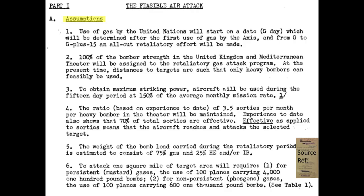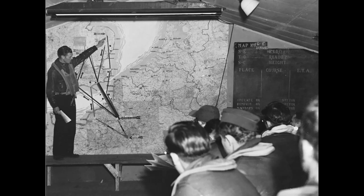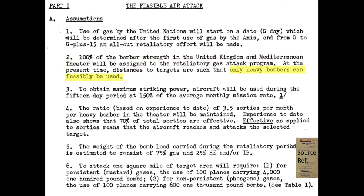The logistics and order of battle for the gas attacks are listed in this section of the report. All conventional strategic and tactical bombing missions will be stopped. Crews will be briefed on their new missions, loadouts, and targets. The city bombing poison gas attacks will start on G-Day — I suppose G is for gas. The operation will last 15 days and will be considered a maximum effort. Only B-17s and B-24s will be available to participate. To ensure maximum German casualties, the bomb load mix will consist of 75% gas and 25% either high-explosive or incendiary bombs. 100 bombers are needed to gas each square mile of urban area.